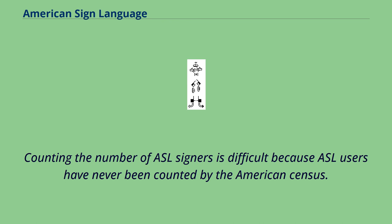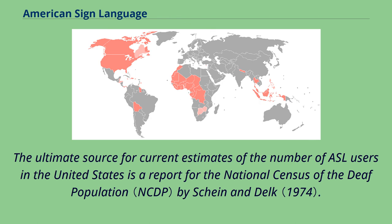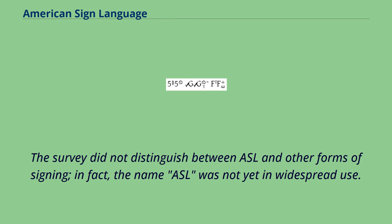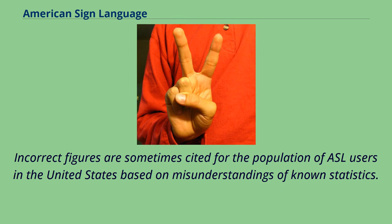Counting the number of ASL signers is difficult because ASL users have never been counted by the American census. The ultimate source for current estimates of the number of ASL users in the United States is a report for the National Census of the Deaf Population by Shine and Delk. Based on a 1972 survey of the NCDP, Shine and Delk provided estimates consistent with a signing population between 250,000 and 500,000. The survey did not distinguish between ASL and other forms of signing; in fact, the name ASL was not yet in widespread use.